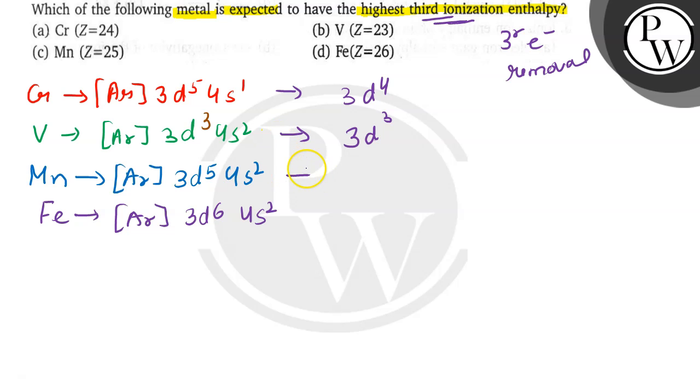Whereas for Mn, the electronic configuration will be 3d5, and for this it will be 3d6.